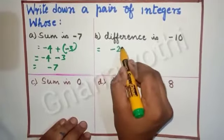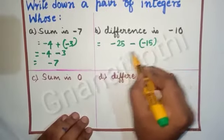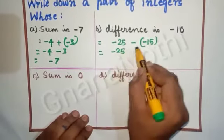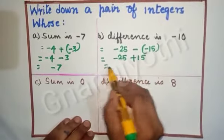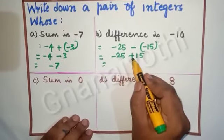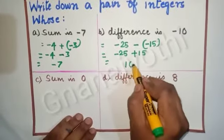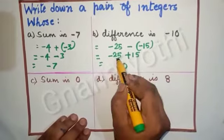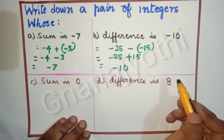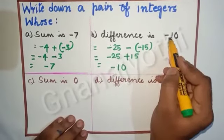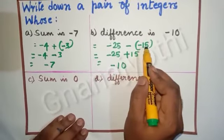I will take minus 25. The difference — the greater one — minus into minus 15. So it is equal to minus 25. Let us simplify: minus into minus, it is plus 15. Now observe children: here it is minus 25 and here it is plus 15, which means we need to subtract this. When we subtract, I get 10. The greater number carries its sign, so the result gets minus. Therefore, the difference of minus 10 — the required integers are minus 25 and minus 15.